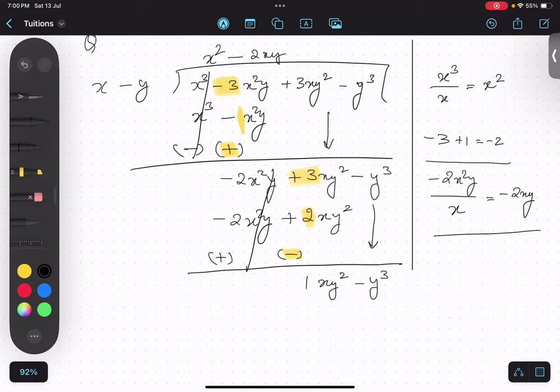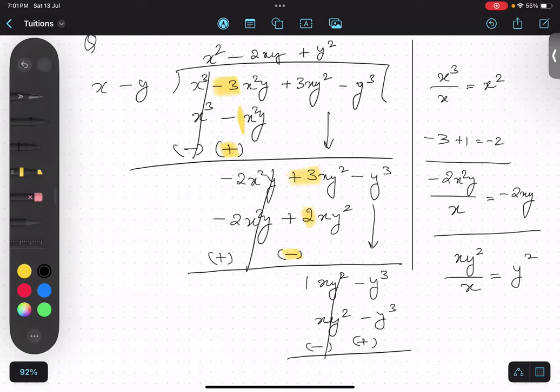We will repeat the process. xy² divided by x will give me y². So it is a plus y². So again I will multiply x into y² is xy². Minus y into y² is minus y³. So change the sign. And this will get cancelled.